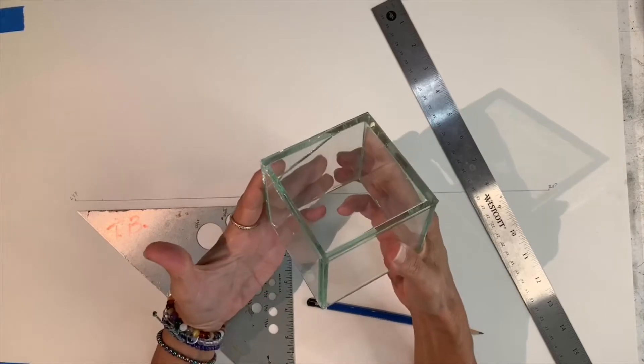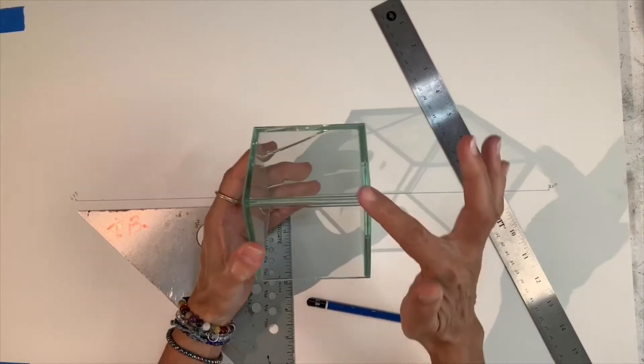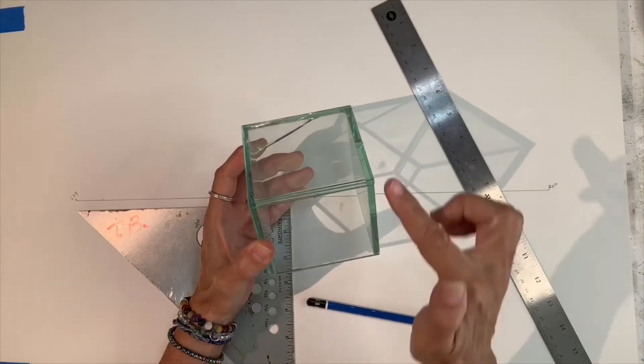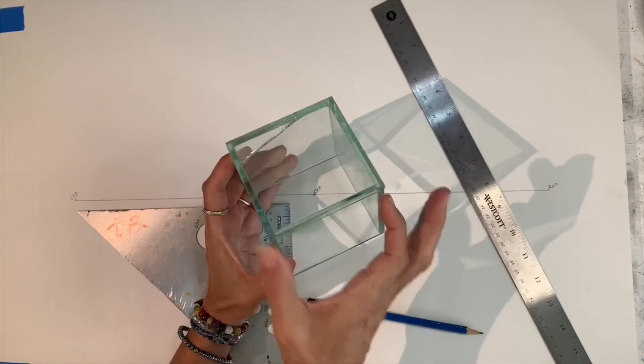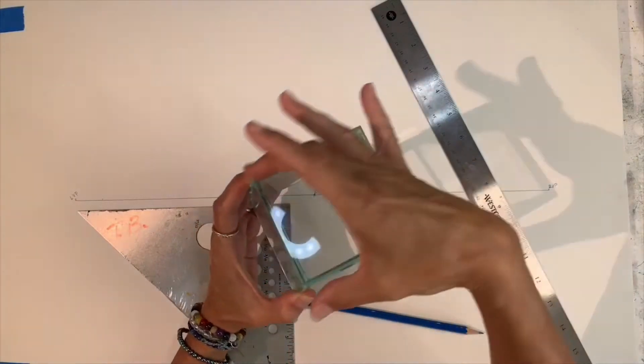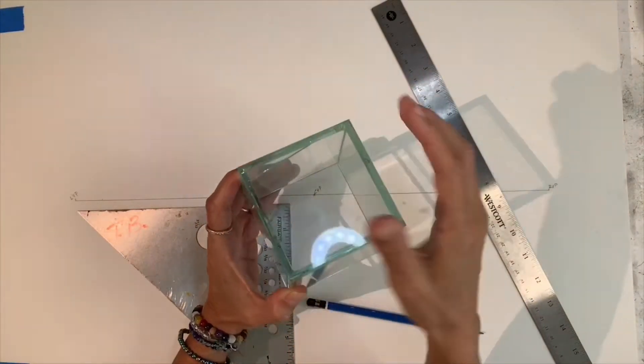In a cube, all three of those are parallel, meaning the lines—see these vertical lines—are at an equal distance to each other. So the height, those lines, these lines, these lines are all parallel.